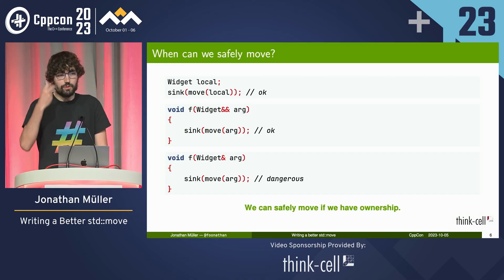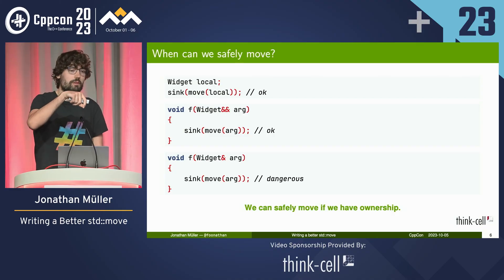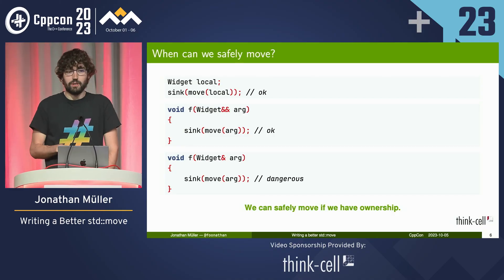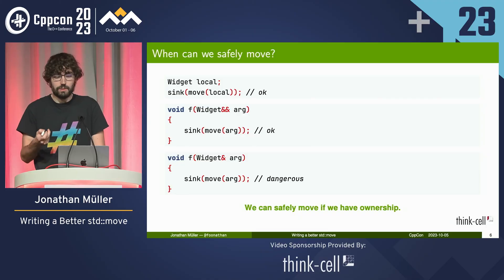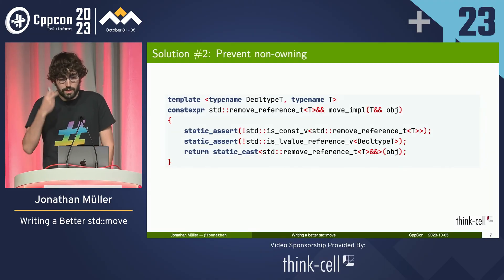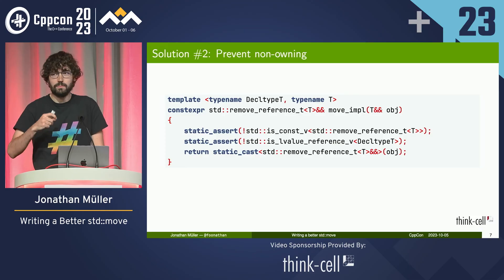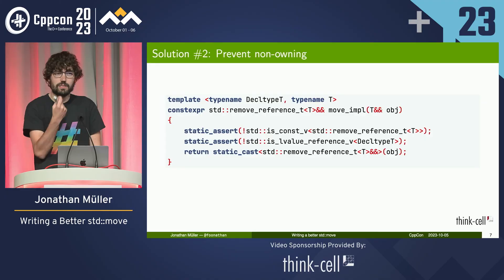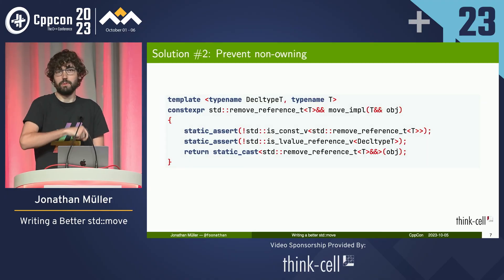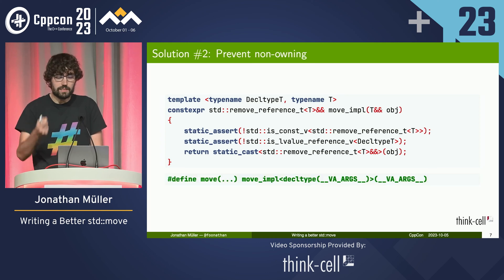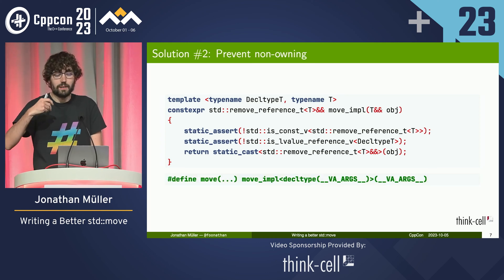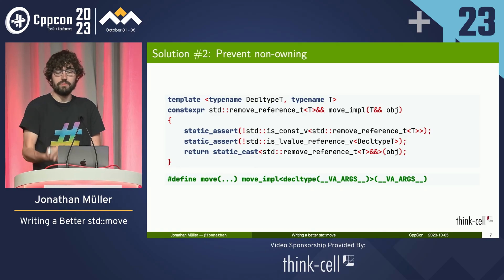We want to prevent the move operation if the thing we are passing in is an L-value reference. So we add another static assert for the L-value reference, but the thing is we can't do a static assert on T itself because T will always be an L-value reference — we need the decltype of the thing. So we need a macro, because macros are great. This gives us the decltype of the thing, and then we can do the static assert on the L-value reference.